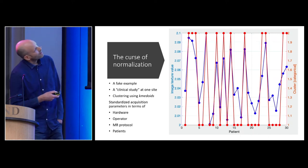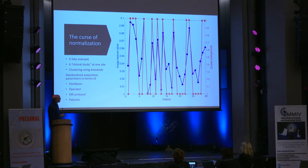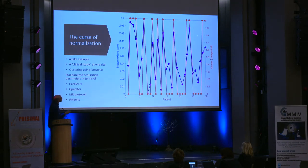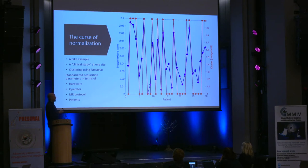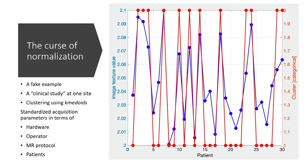Here is a simple example. I have a cohort of 30 patients, each with image texture values shown as blue dots. When I do blind clustering, I get red dots indicating cluster membership: high blue values belong to cluster two, and low ones belong to cluster one. Maybe we captured some important biological feature — but only if the study was completely standardized in terms of hardware, operators, MR protocol, and patients. In real life, that is not the case.